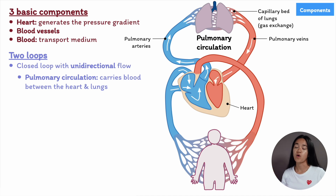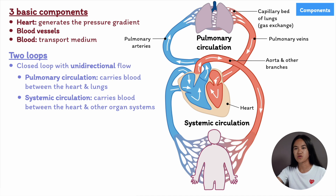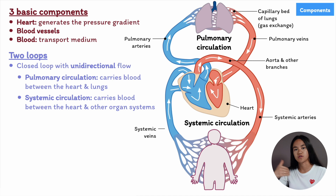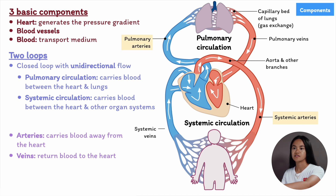The systemic circulation is much larger and carries blood between the heart and all the other organ systems. Blood leaves the heart via the aorta — some goes up via the ascending arteries to the head, neck, and upper limbs, and some goes down via the abdominal aorta to the lower limbs — then returns to the heart. Blood vessels that carry blood away from the heart are called arteries, and blood vessels that return blood to the heart are called veins.